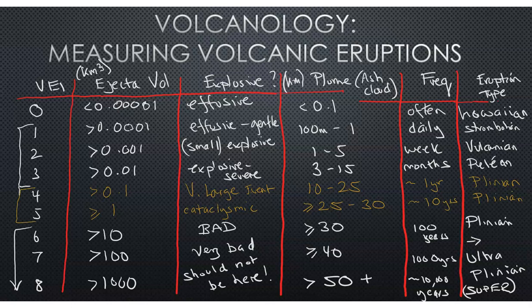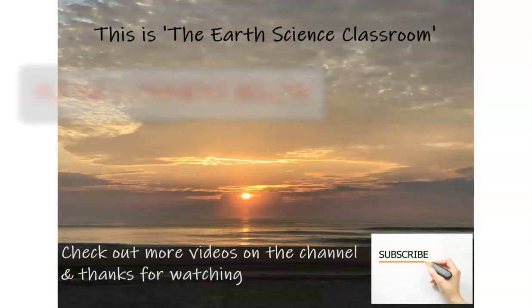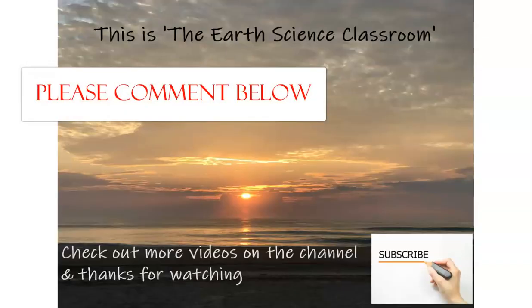We can classify these volcanoes, these eruptions, based on these characteristics and look at both primary and secondary hazards that come with a larger eruption above a VEI-4 up to an 8. This is the Earth Science Classroom. Thank you for watching.